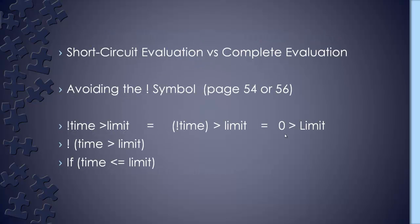The book talks about short-circuit evaluation versus complete evaluation — page 53 in the fifth edition, page 55 in the sixth. With C++, it knows that all statements in an AND expression have to be true for the expression to be true. So as soon as it finds one that's false, it stops evaluating the rest of the expression. That's one of the reasons C++ is faster and so popular — it only evaluates as far as it needs to.